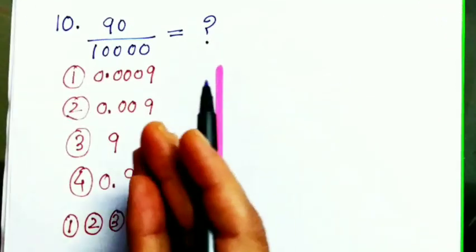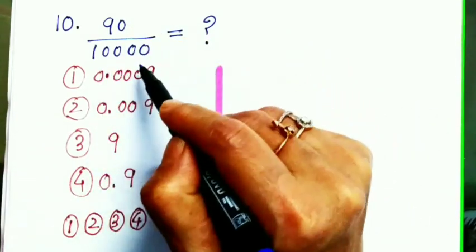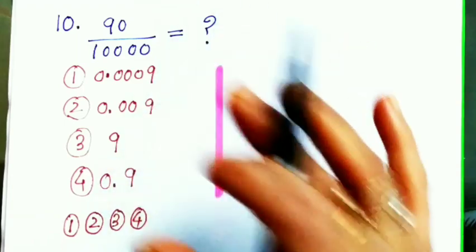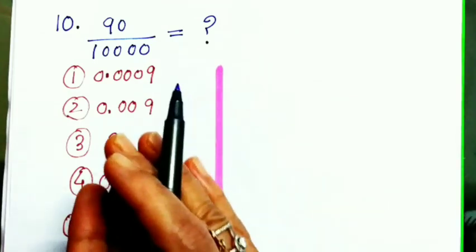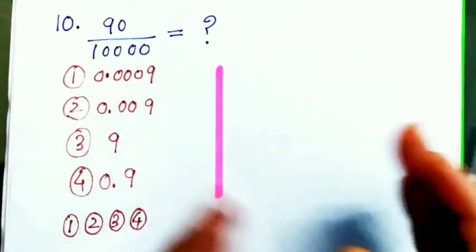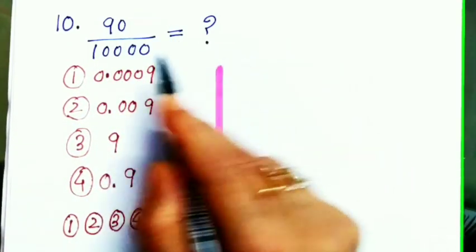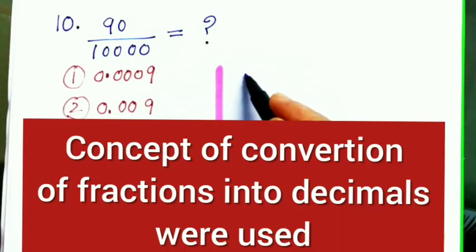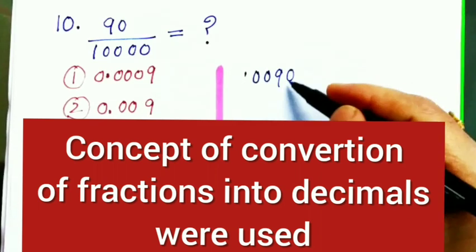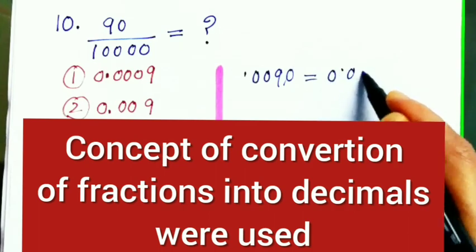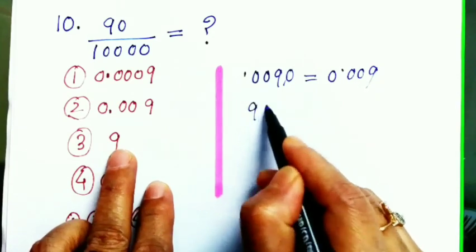Question number 10, and this will be the last question of our MCQ session. 90 divided by 10,000 is equal to how much? Four choices are given. This sum we can do in two ways, after simplifying or before simplifying the question. The result will be the same in both cases. So now I'm doing before simplifying. You see here, one, two, three, four - four zeros are given in the denominator. So I'm writing in the decimal place 0.0090. This will be the answer, but this 0 is not counted, we know. So the answer will be 0.009.